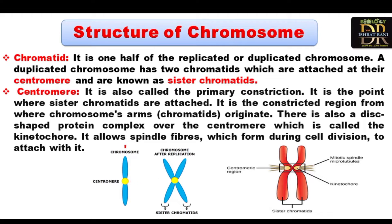What is the centromere? The centromere is called the primary constriction. It is the point where two sister chromatids are attached and the constricted region from where chromosome arms or chromatids originate. There is also a disc-shaped protein known as the kinetochore, which allows the spindle fibers to attach during cell division.